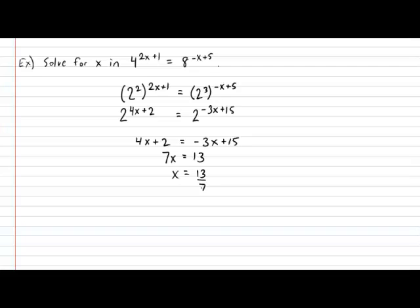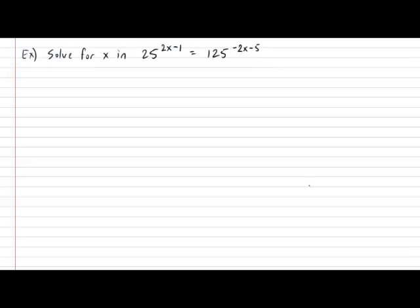So you see the added complication in this example: not only did both bases on both sides need to be changed to a common base, but we also had x found in both exponents on both sides. Why don't you try, on your own, one of these tough ones as our final example? Solve for x in the expression: 25 exponent 2x minus 1 equals 125 exponent negative 2x minus 5. Pause the video and try it now.